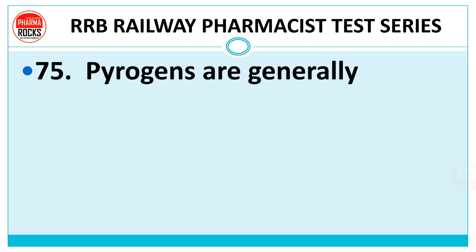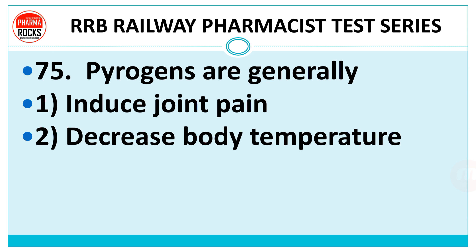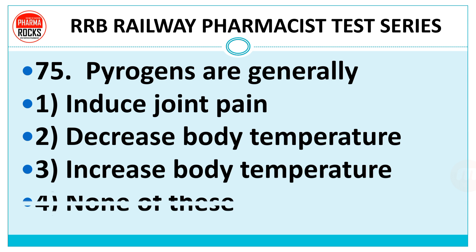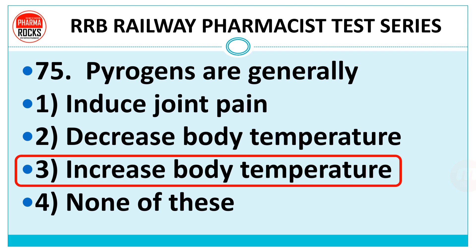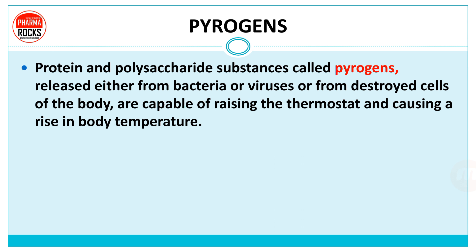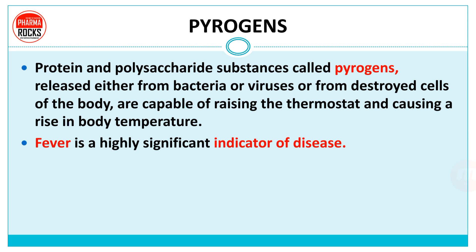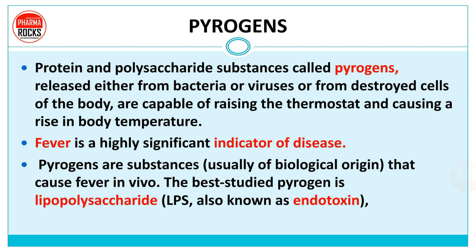Question 75: pyrogens generally induce — joint pain, decreased body temperature, increased body temperature, or none of these? The right answer is increased body temperature. Pyrogens are protein and polysaccharide substances released from bacteria, viruses, or destroyed body cells, capable of raising the thermostat and causing a rise in body temperature. Fever is a highly significant indicator of disease. The best studied pyrogen is lipopolysaccharide, LPS, also known as endotoxin.